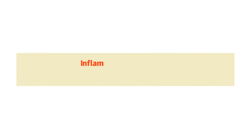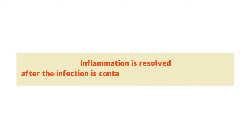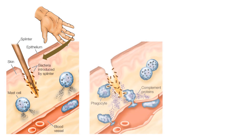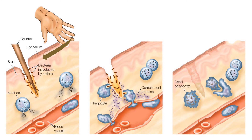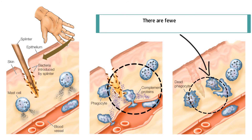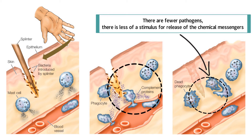Number 5. Inflammation is resolved after the infection is contained and the wound has healed. When inflammation comes to an end, it is commonly referred to as inflammation being resolved. It is damage to the tissues or the presence of pathogens that causes the chemical response beginning inflammation. As inflammation continues and there are fewer pathogens, there is less stimulus for release of the chemical messengers that cause inflammation.